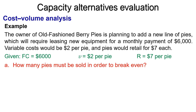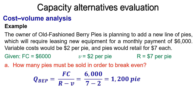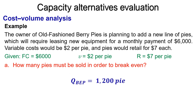The first question is to find the break-even point, Q_BEP, which can be found by solving the formula. So, Q_BEP = 6,000 ÷ (7 − 2) = 1,200. The answer is Q_BEP = 1,200 pies.